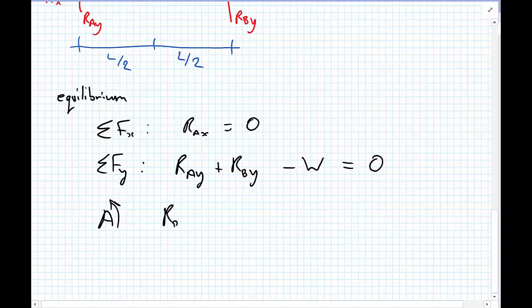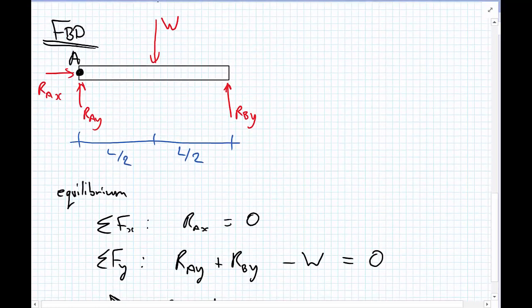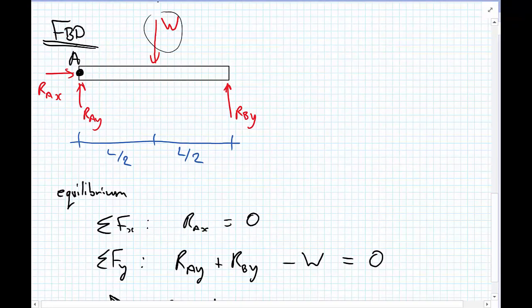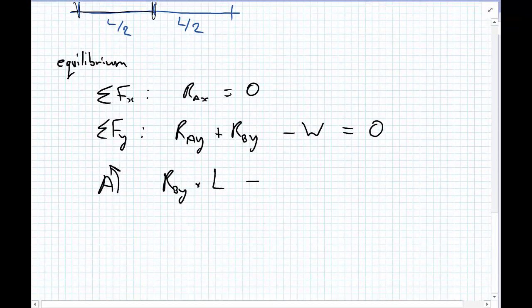I have RBY multiplied by the lever arm, which is L, going in the anti-clockwise direction, and going in the clockwise direction, I have W multiplied by L upon 2. So, minus W multiplied by L upon 2. That's all equal to 0.